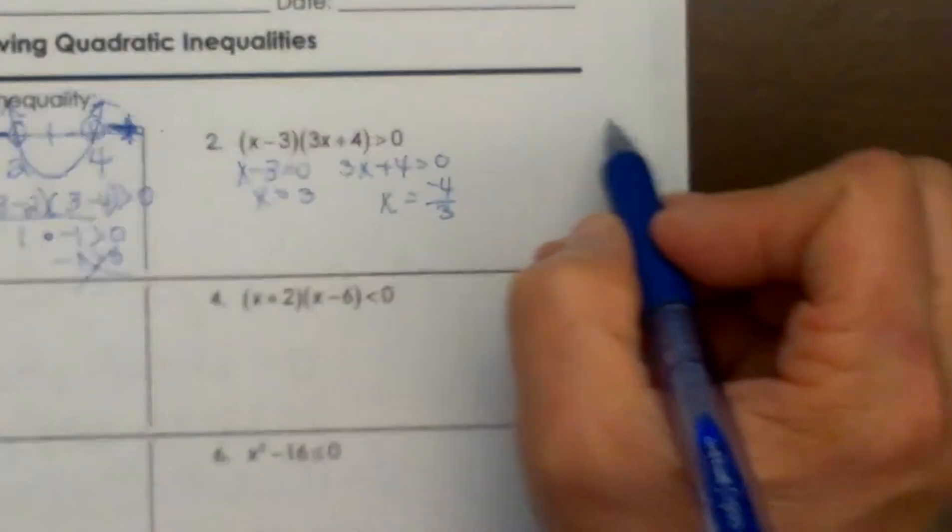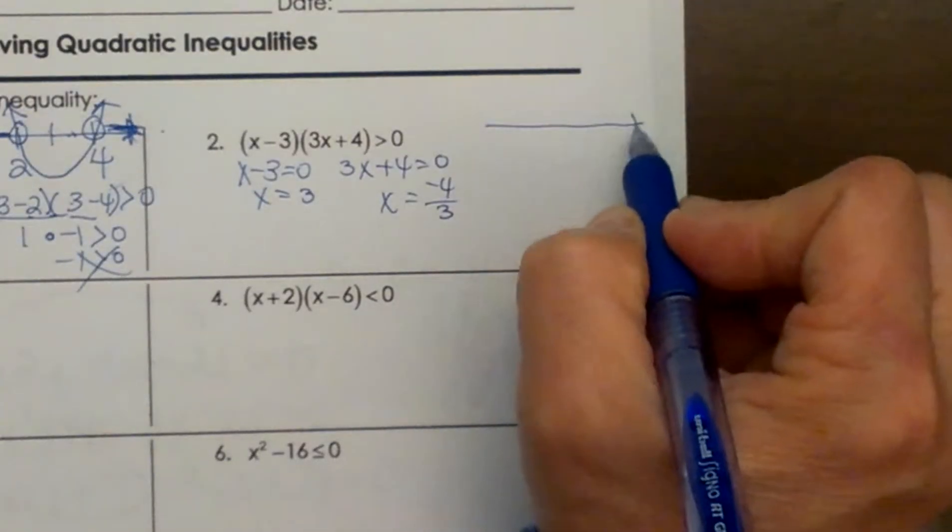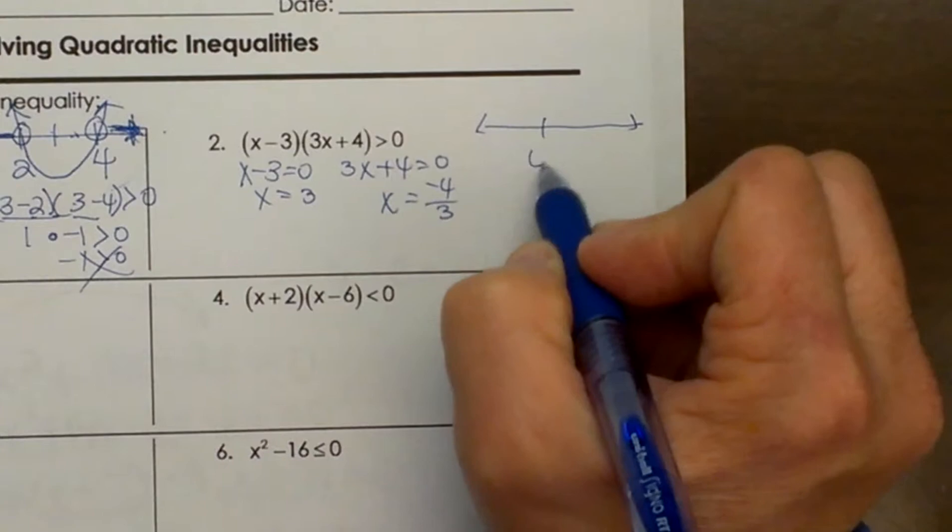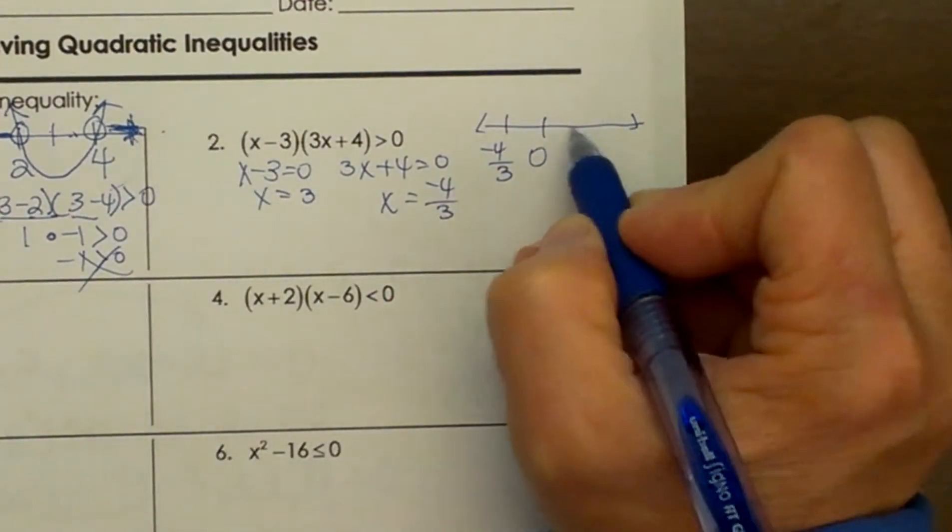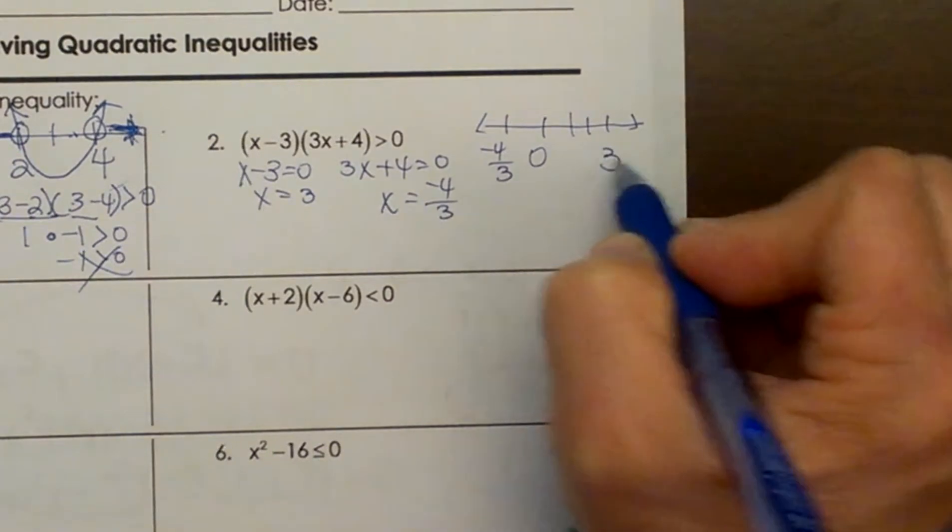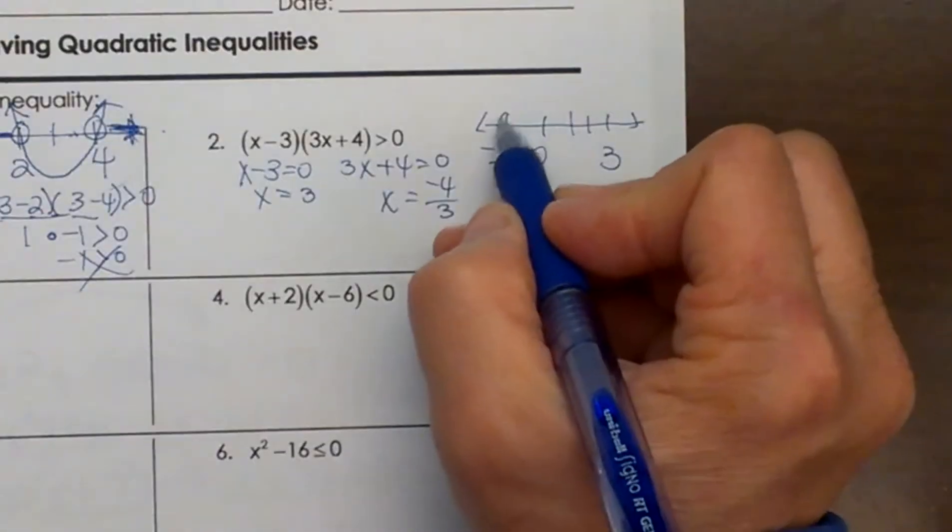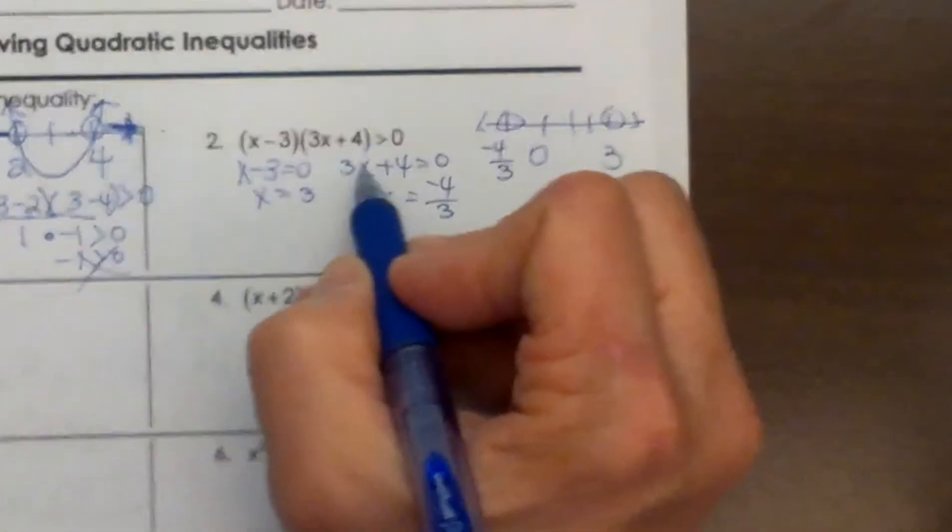So our number line. Draw our number line over here. And we have a 0 here. A negative 4 thirds to the left of it. And a positive 3 to the right. I have open circles because it is just greater than.